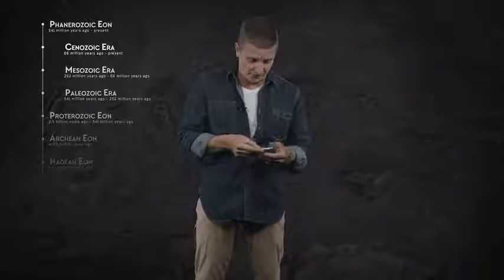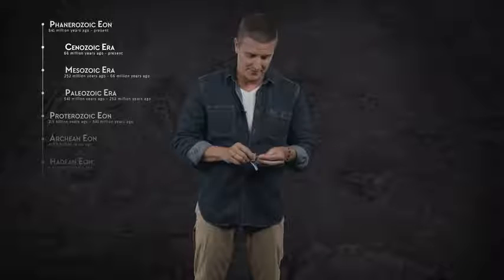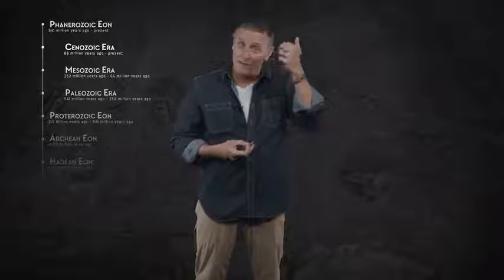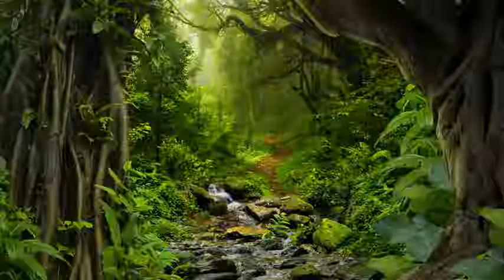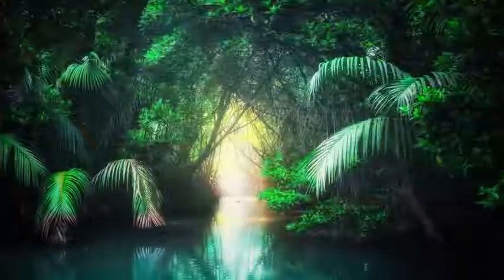We have 66 million years to go, and that's the last major extinction event we have to talk about. With all the great reptiles gone, the smaller animals that remained were able to eke out a living in the next era, the Cenozoic — our era, in more ways than one. It's the era we're in today, and it marks the rise of the mammals. Soon after the KPG extinction, the climate warmed and jungles stretched across the planet.